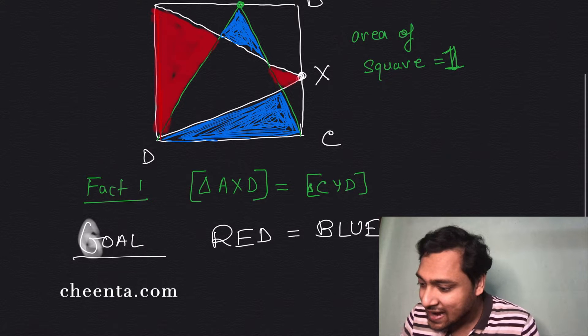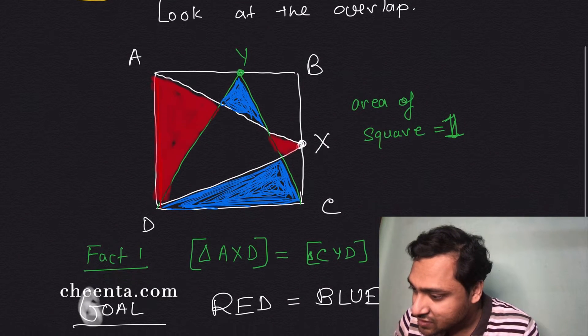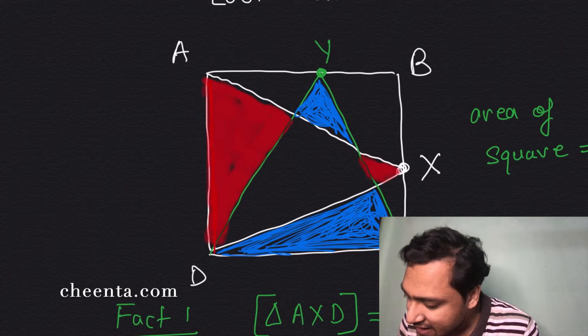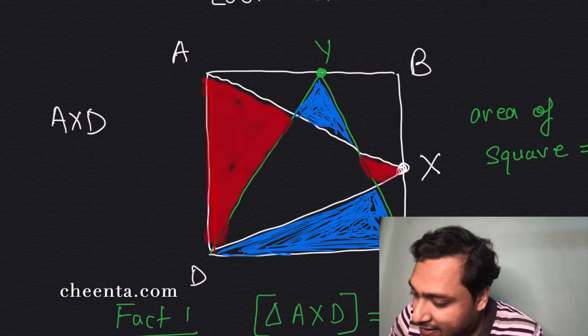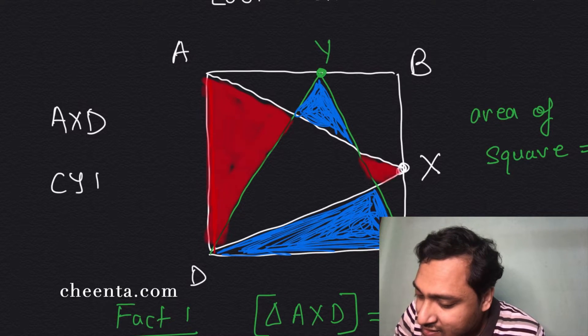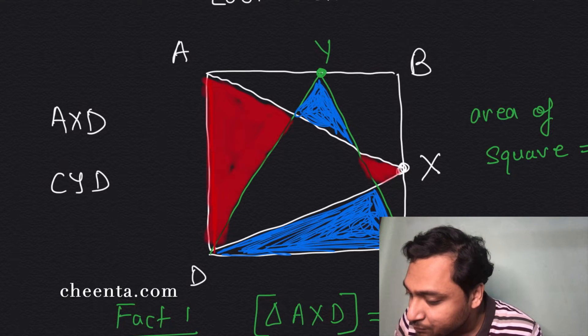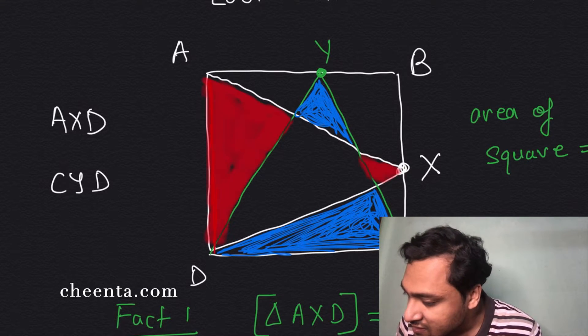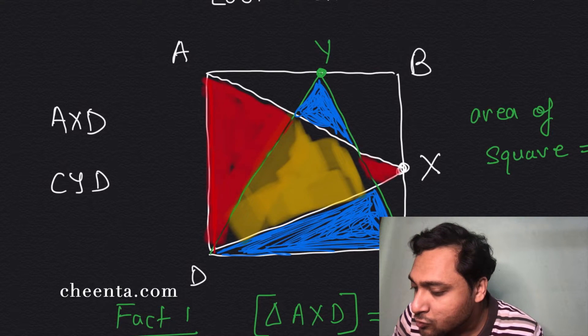...that the triangle, okay maybe I can just do it here, triangle AXD and triangle CYD, they are overlapping in this yellow zone. So this yellow portion is the overlap.